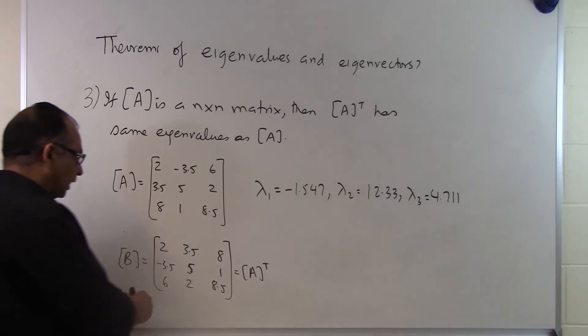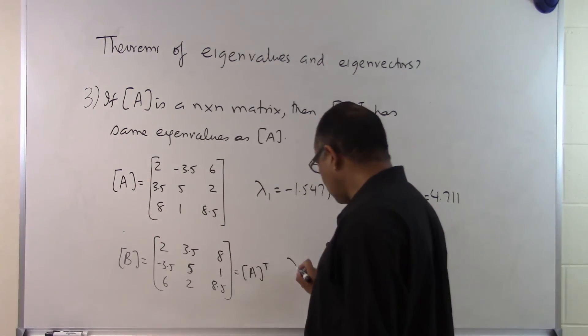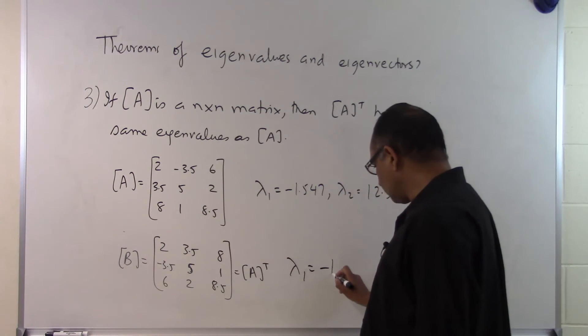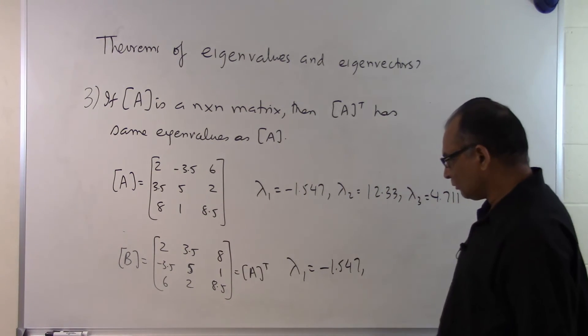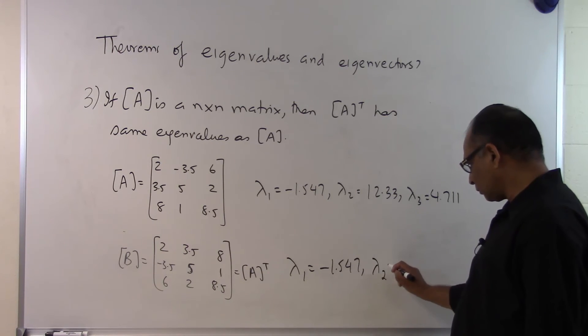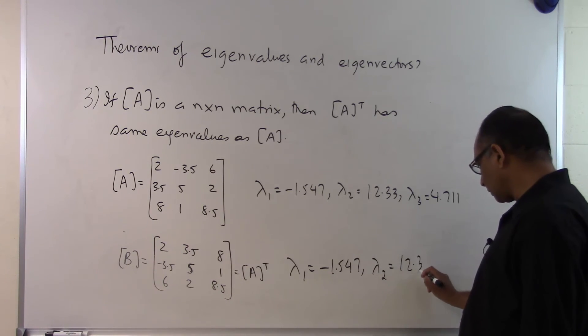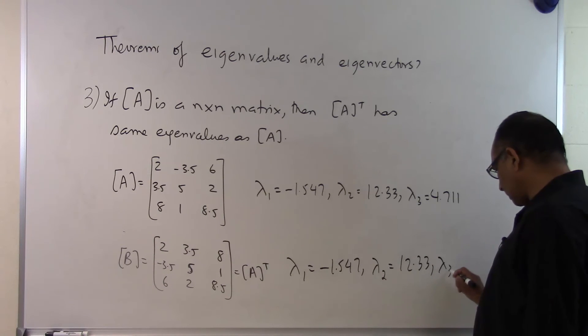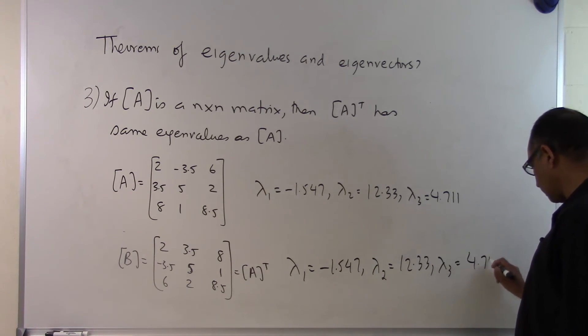Then the eigenvalues of B are the same. So the eigenvalues of B will be lambda 1 equal to minus 1.547, lambda 2 equal to 12.33, and lambda 3 equal to 4.711.